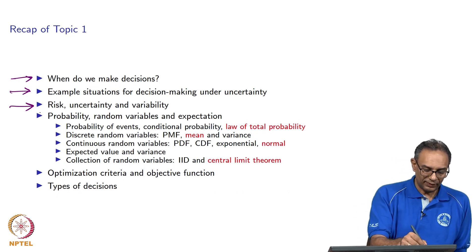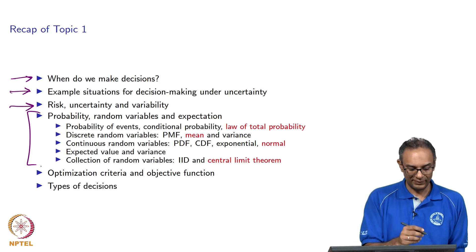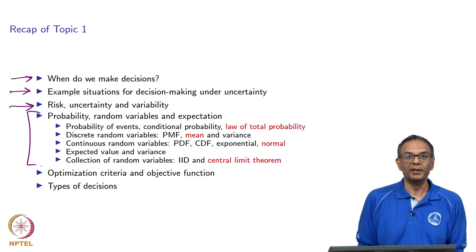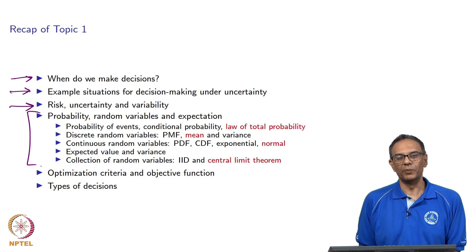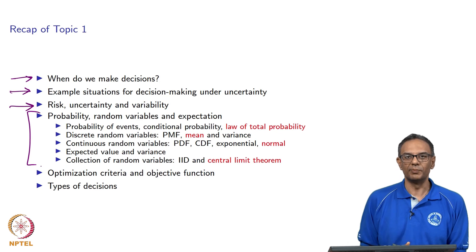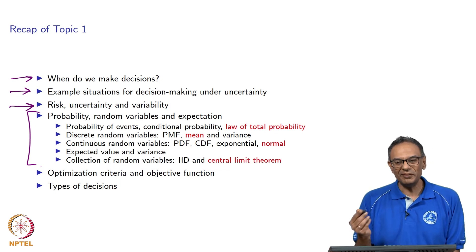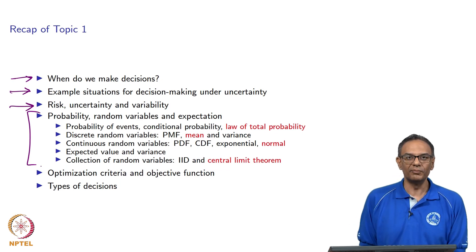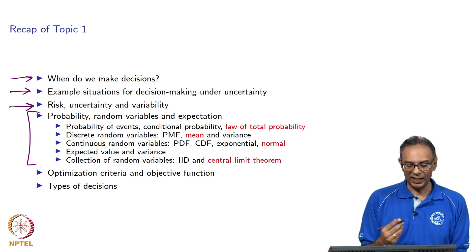The mathematical part of Topic 1 is essentially the part called Probability, Random Variables, and Expectations. We started by talking about probability of events and then went into conditional probability and the law of total probability. In general, I do assume that this material should be a review for most people. However, if you are not familiar with this, I would recommend going through some of these topics.